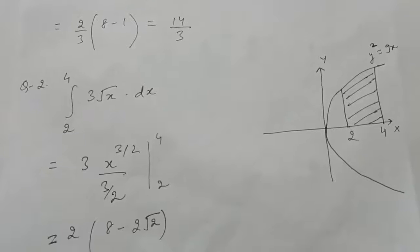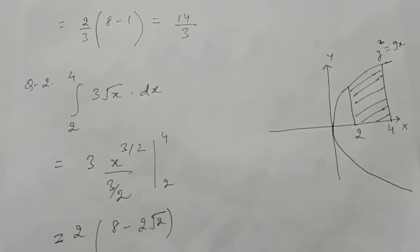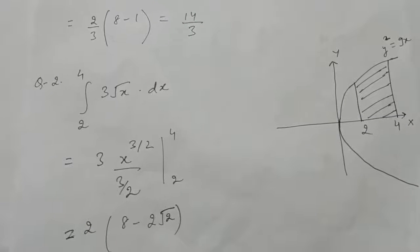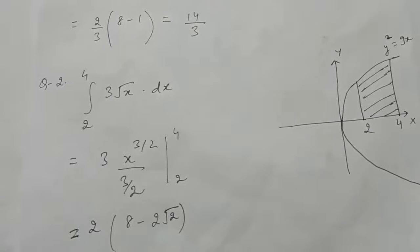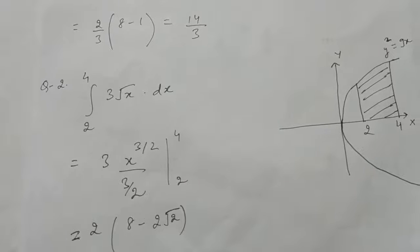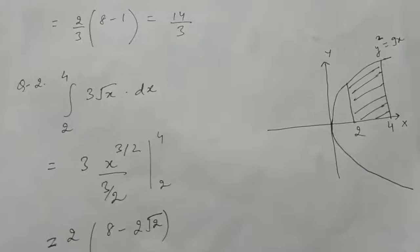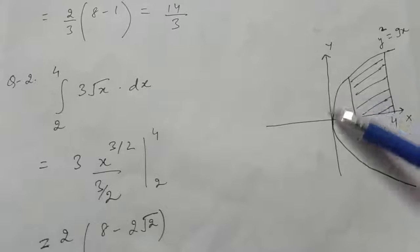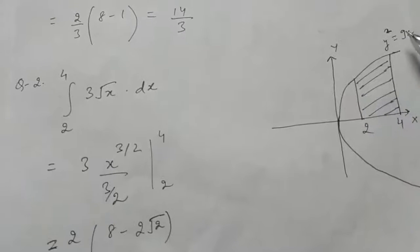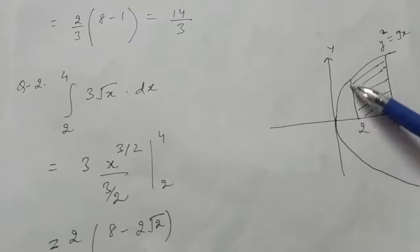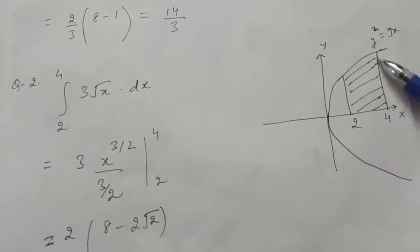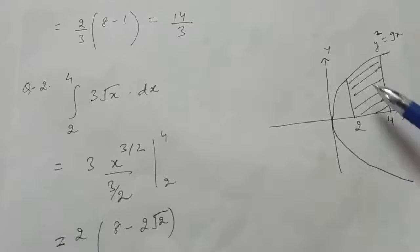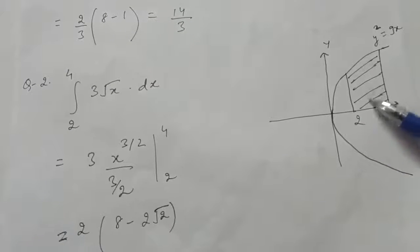Question number 2: find the area of the region bounded by the curve y² = 9x, x = 2, x = 4, and the x-axis in the first quadrant. We have to find the area bounded by the curve y² = 9x, the lines x = 2 and x = 4, and the x-axis in the first quadrant. This is the region.